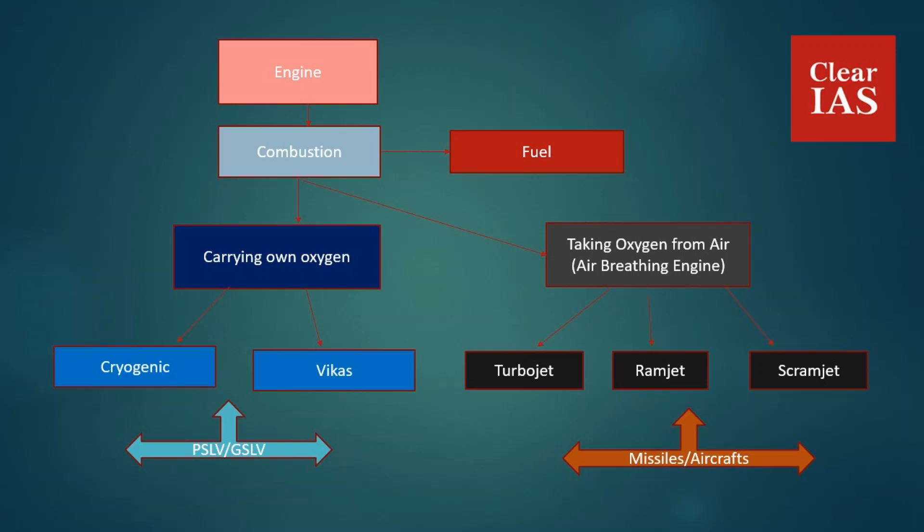This increased weight may affect the efficiency of the flight. With air-breathing engines, you need not carry oxygen, so efficiency is slightly increased. Turbojet, ramjet, and scramjet do not need to carry oxygen with them, so their efficiency is slightly better compared to other engines like cryogenic and Vikas.